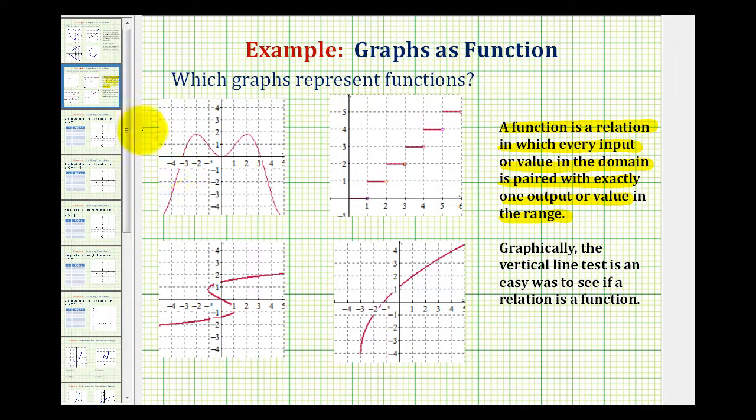So looking at this first graph, if we sketch several vertical lines, we can see no vertical line would ever intersect this graph in more than one point and therefore it passes the vertical line test and this graph does represent a function.